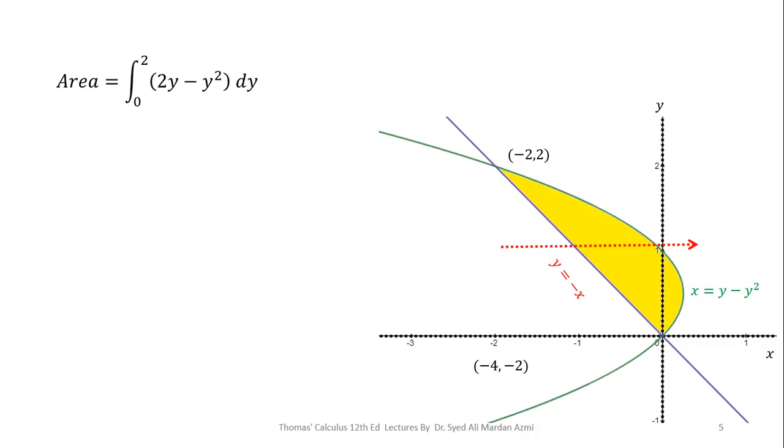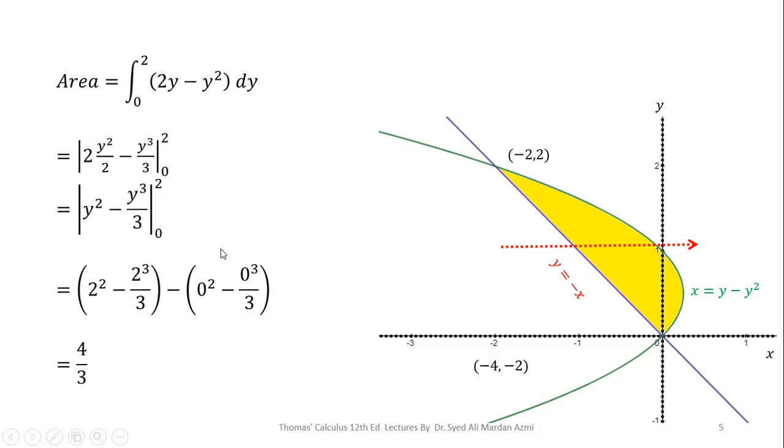In the next step, we will perform the integration. Integration of y is y²/2 and the integration of -y² is -y³/3. 2 and 2 will be cancelled out and in the next step, we have applied limits, upper limit minus lower limit. For upper limit, we have replaced y with 2, and for lower limit, we have replaced y with 0. So, after simplification, we get 4/3 as area of this given region.